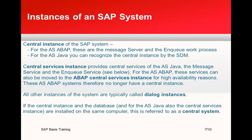This shows how you can separate different layers for providing different services. For the AS ABAP, the central instance contains the message server and the enqueue work process, which are mandatory. For the AS Java, you can recognize the central instance by the SDM process. Central services provide the message service and enqueue service for the AS Java.